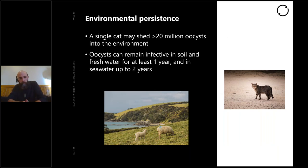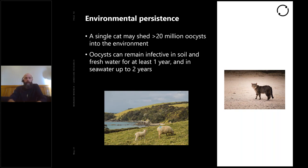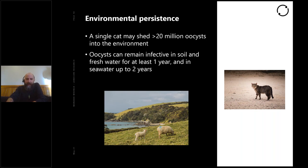One cause of those complications is the environmental persistence of toxoplasmosis. A single cat can shed over 20 million oocysts — some reports say over 100 million oocysts — into the environment. These oocysts can remain infective in soil and freshwater for up to a year, and in saltwater for two years. So even if you remove cats completely from the environment, the oocysts are still there. If cats move back in, they could pick it up and start the life cycle all over again, and it will take a long time to notice measurable effects in accidental hosts.